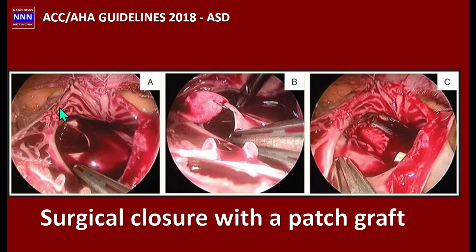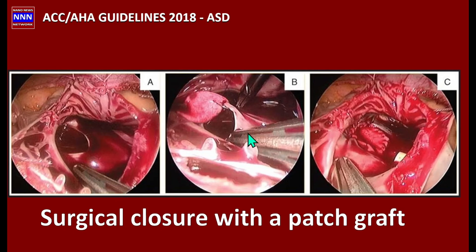The surgical procedure involves opening the right atrium, visualizing the hole directly, and closing it with a graft patch before closing the atrium. That is surgical closure of the atrial septal defect.